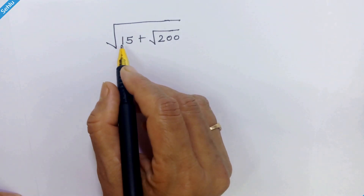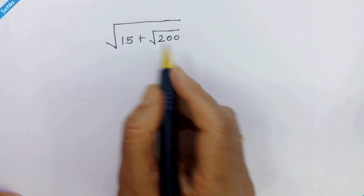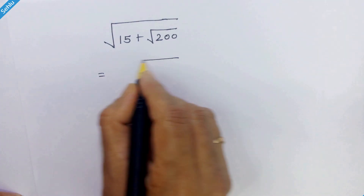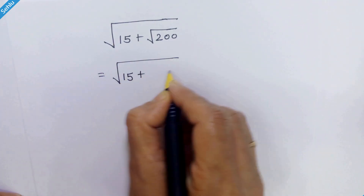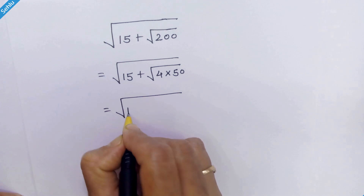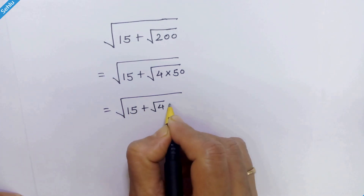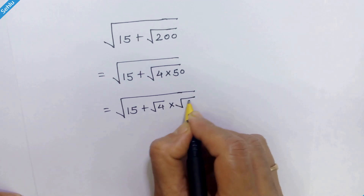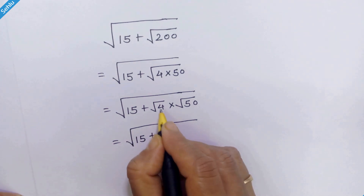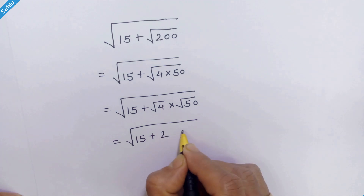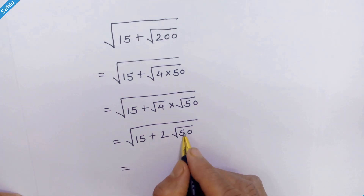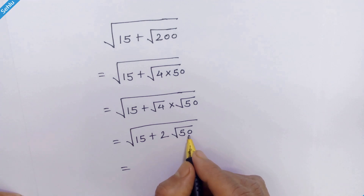Hello friends, here we have square root of 15 plus square root of 200. How do we simplify this? Let's focus on square root of 200. It can be written as square root of 15 plus square root of 4 times 50, which equals square root of 15 plus square root of 4 times square root of 50. Square root of 4 is 2, so we can write 2 times square root of 50.